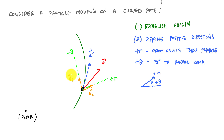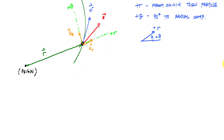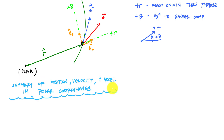I can use unit vectors to define these directions: u-r-hat for the radial unit vector and u-theta-hat for the transverse unit vector. My position vector goes from the origin to the particle. The position vector is only in the radial direction, so it's defined as some magnitude r acting in the radial direction: r times u-r-hat.